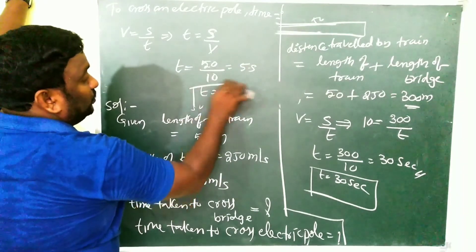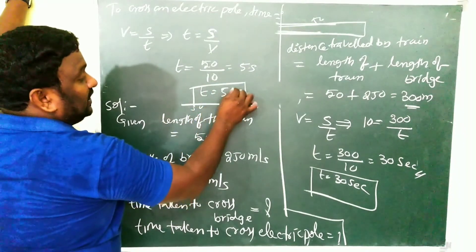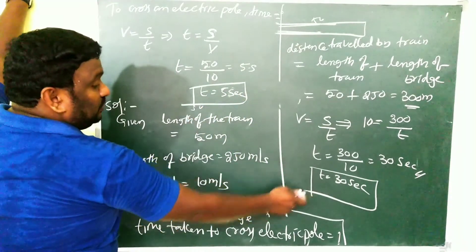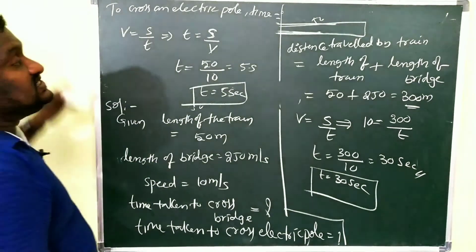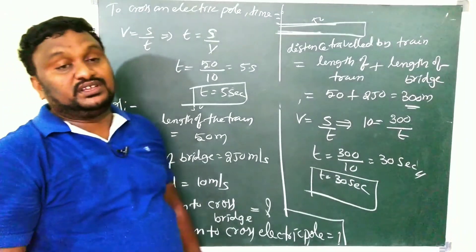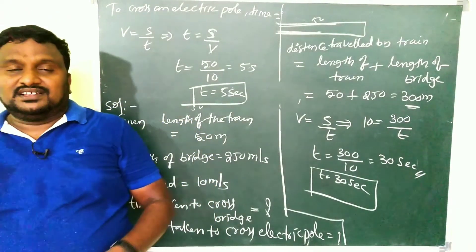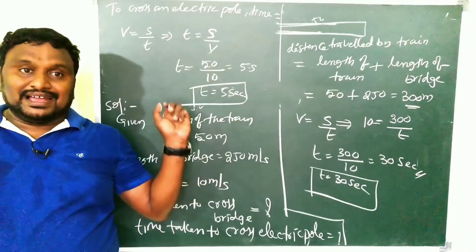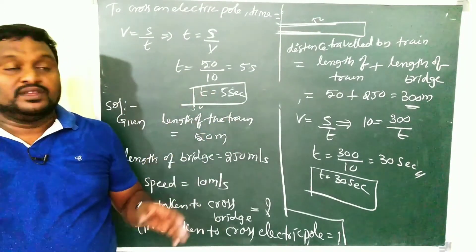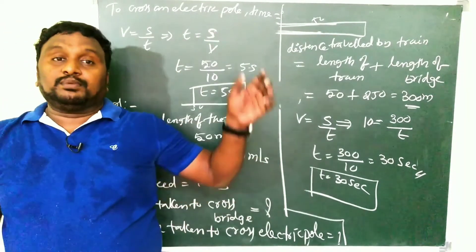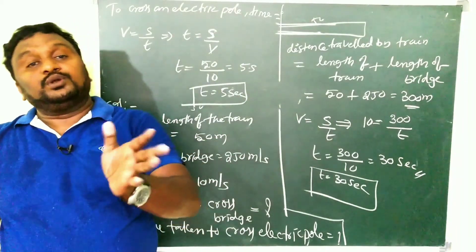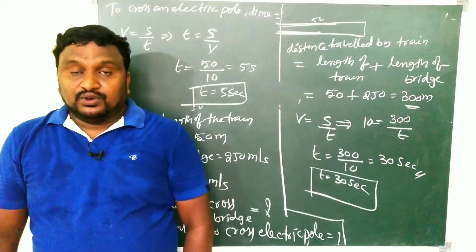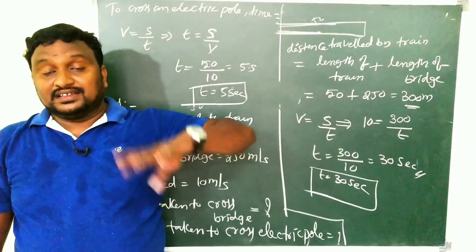So T equals 50 divided by 10, which is 5 seconds. The train crosses one electric pole in 5 seconds. To summarize: the bridge crossing takes 30 seconds and the electric pole crossing takes 5 seconds. That's an interesting problem, children. We will meet in the next video with some other interesting topic. Bye, take care.